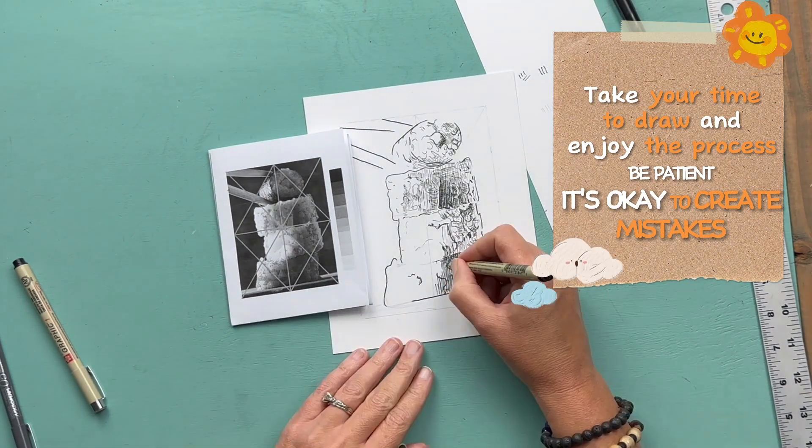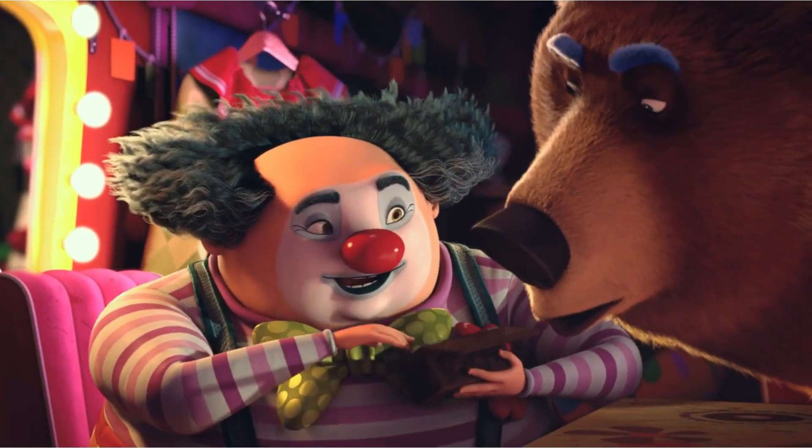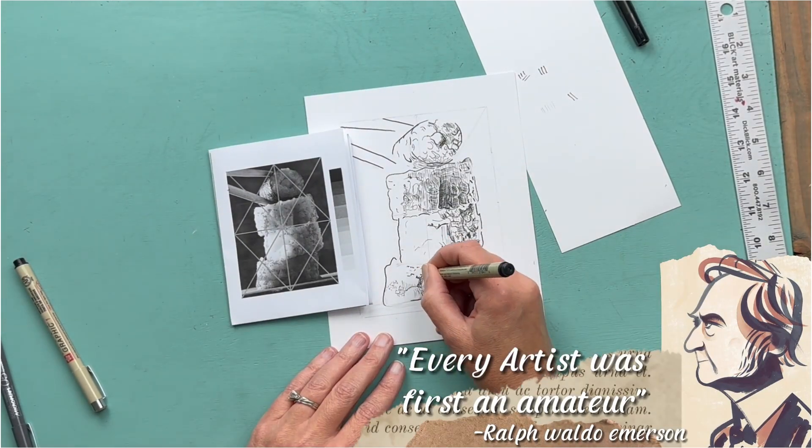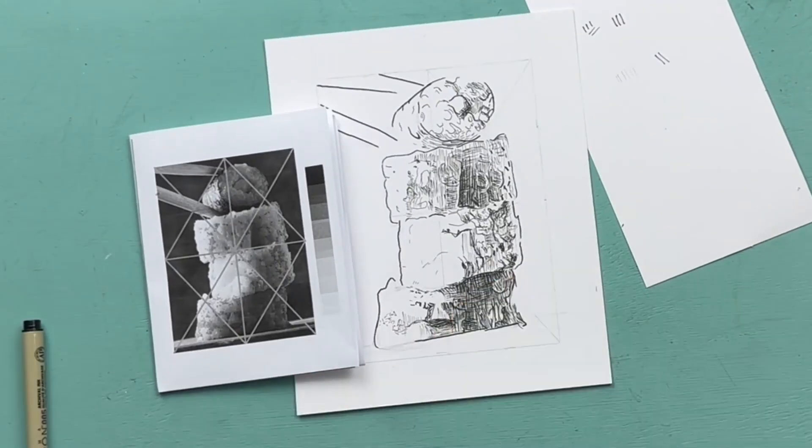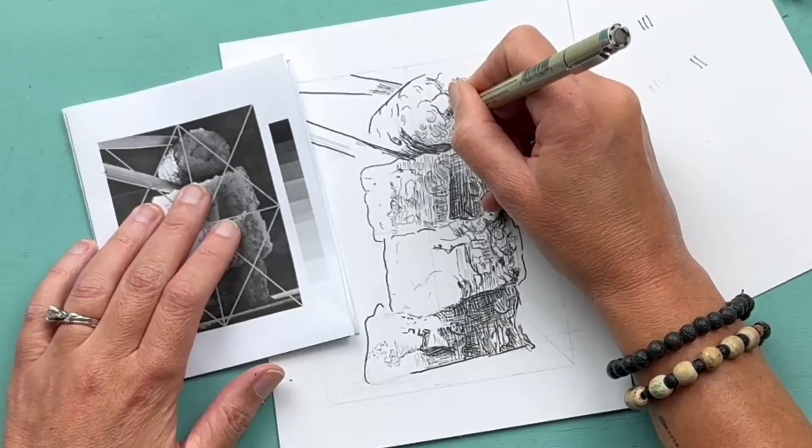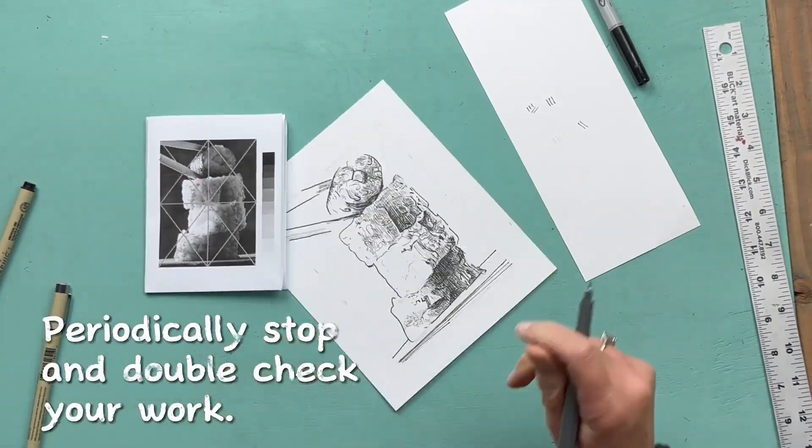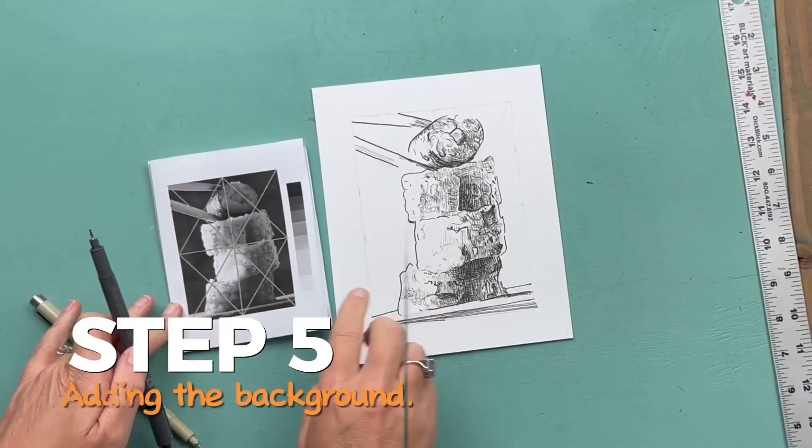What I'm looking for here is some of the textures, also looking at the values. These hatching marks are not only defining the darkness and lightness, they're also being used to mimic the textures that I'm seeing in the reference photo.